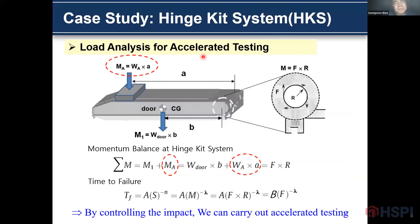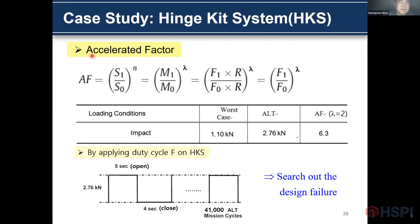This is the load analysis for ALT testing. In the kit system, the load depends on the door weight. To increase the impact, we added additional weight on the end of the door. By controlling the impact, we can carry out ALT testing. The ALT factor depends on the ratio of the impact. The worst case impact is 1.1. For ALT testing, we increase the impact to almost 2.8, giving an ALT factor of 6.3. We apply some duty cycle and we can search for design failure.